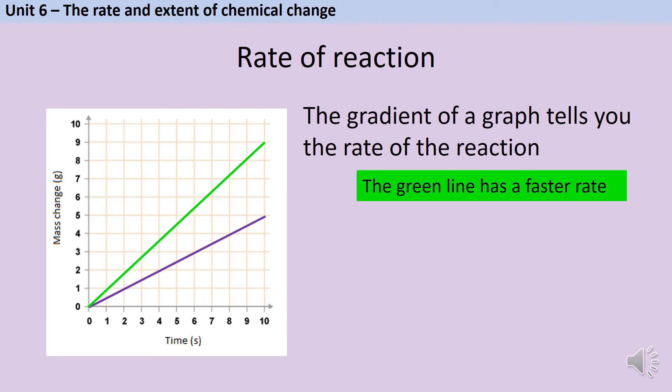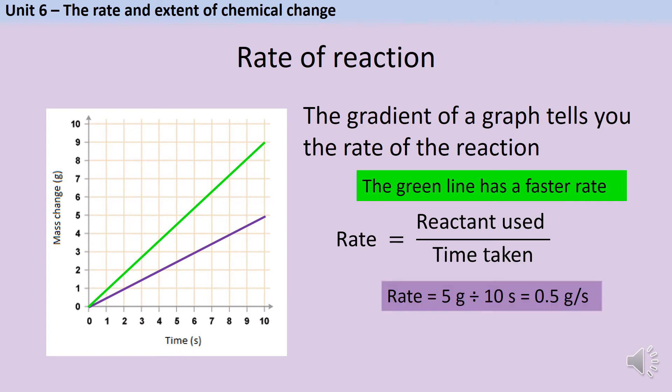But we can also use a graph numerically to work out what the actual rate is. We know that the rate is the amount of reactant used, or the amount of product made, divided by the time taken. So if I look at these two lines here, I can use the numbers on the graph to complete this calculation. For the purple line, there's been a mass change of 5 grams in 10 seconds. So 5 grams divided by 10 seconds gives me a rate of 0.5 grams per second. For the green line, the mass change is 9 grams in 10 seconds. So the rate is 9 divided by 10, which is 0.9 grams per second. You can see from the numbers that the green line is faster, which we already knew because the line was steeper.